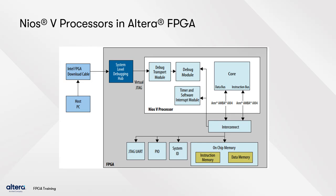The NEOs 5 processor is a soft processor core with data bus and instruction bus. The processor does not include peripherals or the connection logic to external devices. Designed for Altera FPGA devices and developed based on the RISC-V specification, NEOs 5 processors support a wide range of operating systems like Zephyr, FreeRTOS, and Micro-COS2. One advantage of the RISC-V architecture is the availability of numerous resources, as it is an open community with a growing ecosystem for support and development.